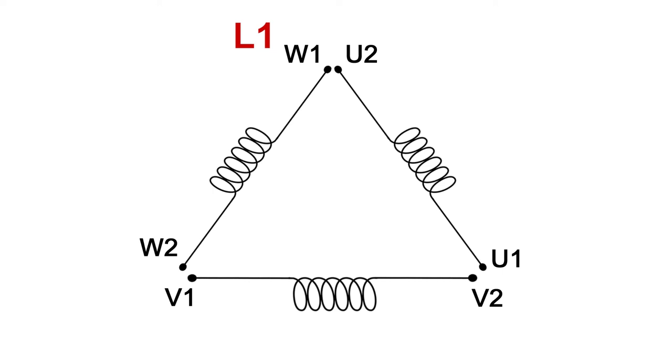So change any two lines and the motor will go the other way. We join U1 to V2 and we could connect that to L2 and then we join the remaining two, which would be V1 and W2 together and connect that to L3.